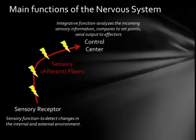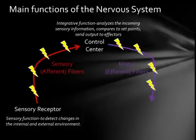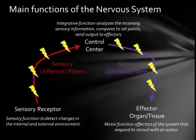Next, an integrative function analyzes the incoming information, processes it by comparing it to previous experiences or to set points, and sends output to effectors. This process is usually carried out by the central nervous system in the brain or spinal cord. Motor or efferent fibers carry the signal via action potentials to effector organs or tissues that can respond to the original detected signal. The motor function responds to the stimuli with an action to correct or respond to the original signal.